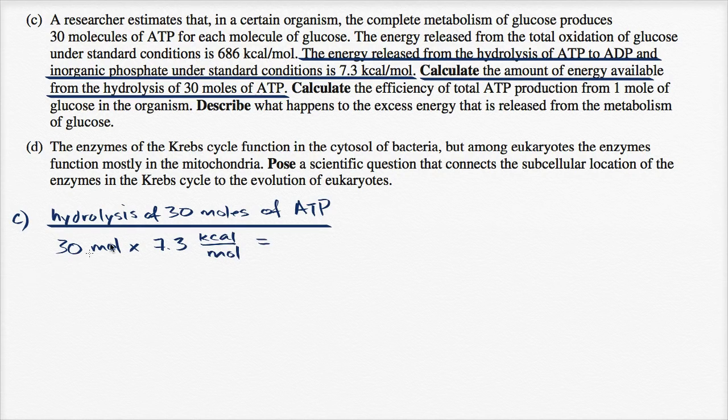So we have 30 moles that is undergoing hydrolysis, so 30 moles times 7.3 kilocalories per mole. And what is that going to be equal to? Well, the moles cancel with the moles. The units are going to be kilocalories, which makes sense because I want units of energy. And what is 30 times 7.3? Three times 7.3 would be 21.9, so this is going to be 219 kilocalories.